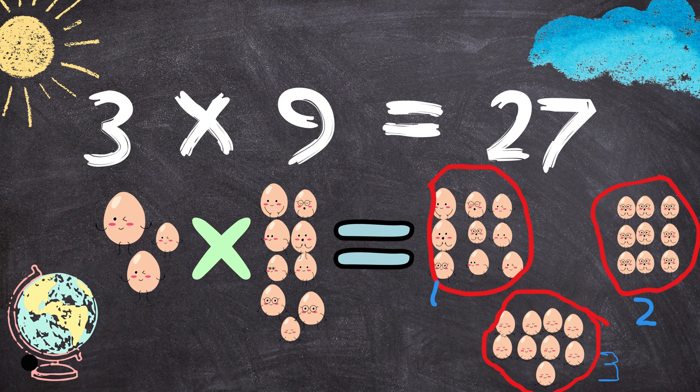Three times nine equals to twenty-seven. Three eggs multiplied by nine eggs equals to twenty-seven eggs.